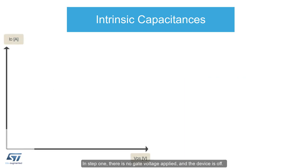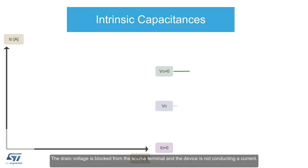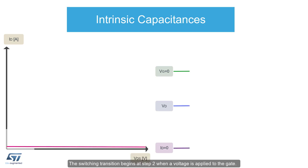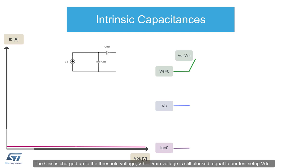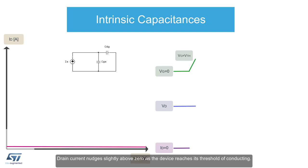In step one, there is no gate voltage applied and the device is off. The drain voltage is blocked from the source terminal and the device is not conducting a current. The switching transition begins at step two when a voltage is applied to the gate. The CISS is charged up to the threshold voltage VTH. Drain voltage is still blocked equal to our test setup VDD. Drain current nudges slightly above zero as the device reaches its threshold of conducting.